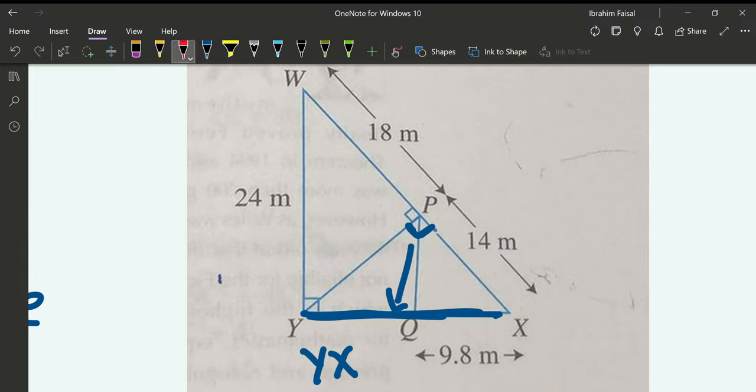Now, in part 2 of this question, they ask you to find the area. So basically, first you need to find YQ. So this way, when you add YQ plus QX, you get the whole length, or the whole measurement of the hypotenuse.